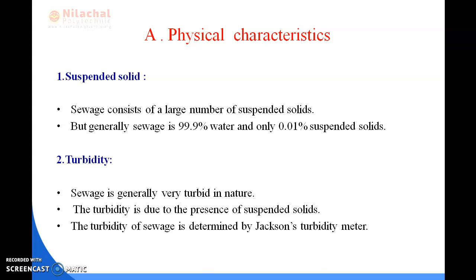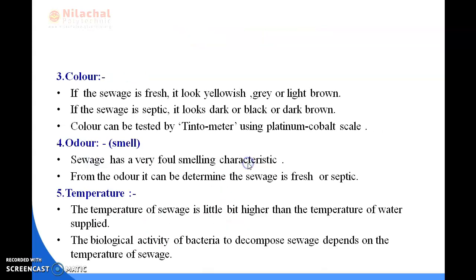Number two is turbidity. Sewage is generally very turbid in nature. The turbidity is due to the presence of different suspended solids or suspended matter. The turbidity of sewage is determined by Jackson's turbidity meter. Sewage is normally turbid, resembling dirty dish water or wastewater from baths, having floating matter like fecal matter, pieces of paper, matchsticks, vegetable debris, fruit skins, soaps, etc. Turbidity increases as sewage becomes stronger.